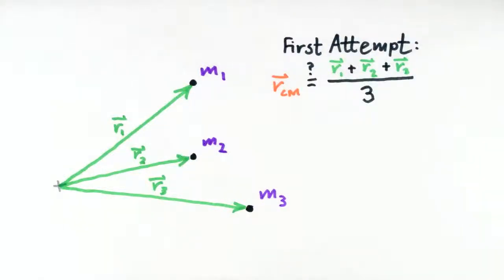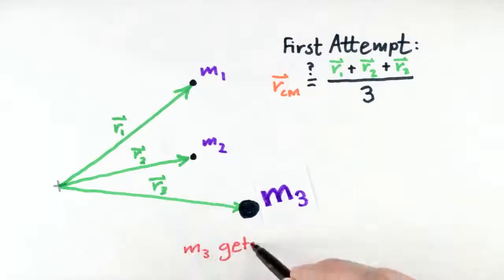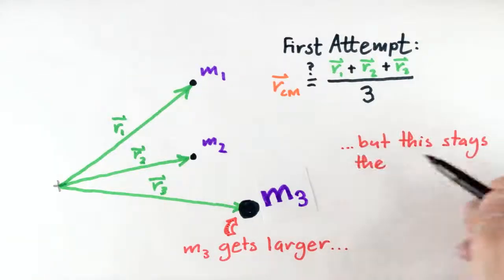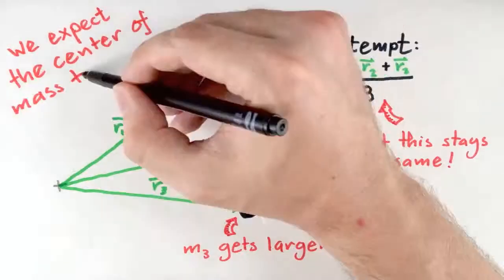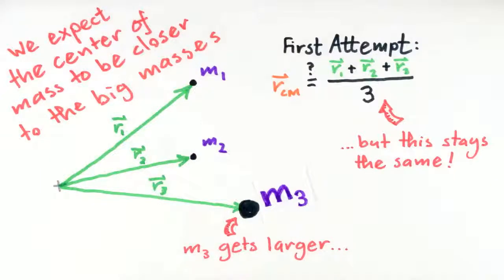You might see that there is a problem with this. If we keep the locations fixed, but change the masses, the average wouldn't change. This doesn't seem right. We would intuitively expect that the positions of the big masses should count more in the average than the positions of small masses.